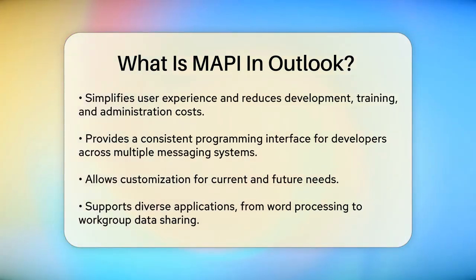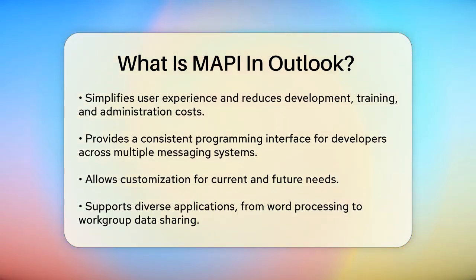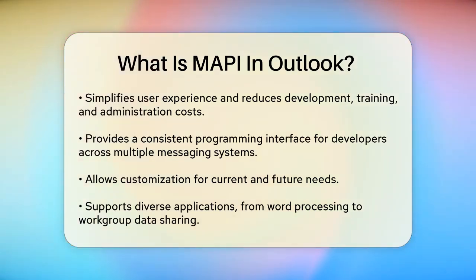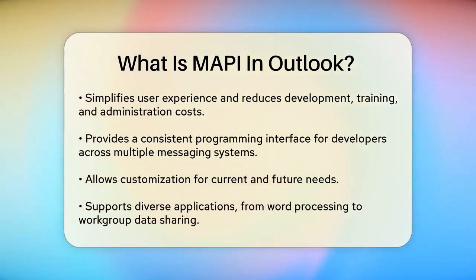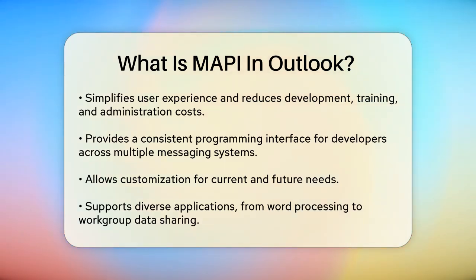MAPI provides a consistent and open programming interface, which means developers can write code that works across multiple messaging systems without needing to adapt it for each specific system. This interface is generic, allowing users to customize it as needed, both now and in the future. For example, a word processing application might only need to send documents, while a workgroup application might need to share and store various types of data.